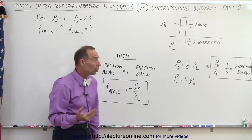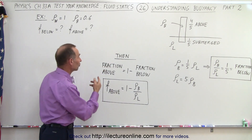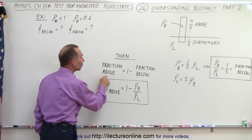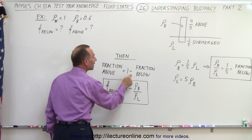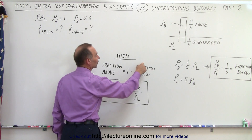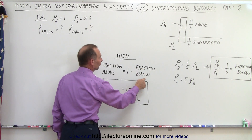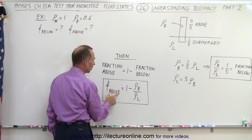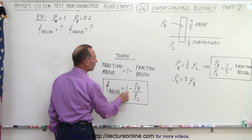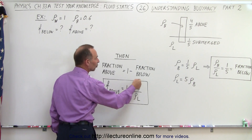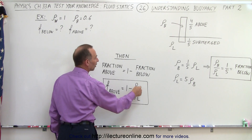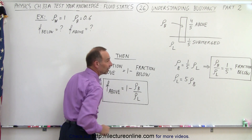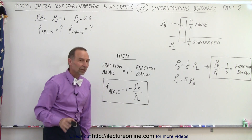If you want to know the fraction of the object above the surface, that will be one minus the fraction below the surface. So the fraction above the surface equals one minus the ratio of the density of the block divided by the density of the liquid.